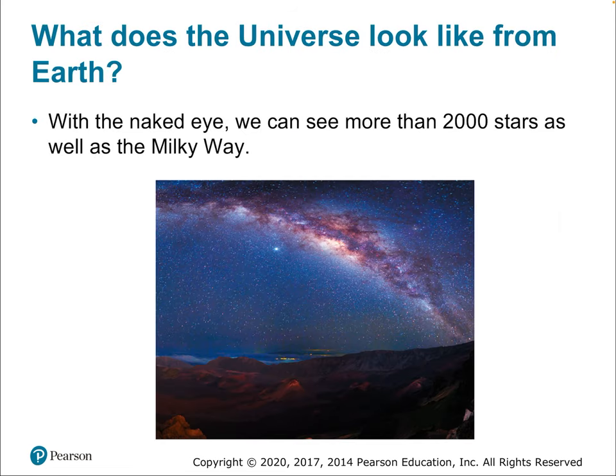With the naked eye, we can see more than 2,000 stars as well as the Milky Way — 2,000 bright stars and the Milky Way composed of many less-bright stars packed so tightly together they appear as a smudge. You can't make out the Milky Way unless the night sky is very dark with very little light pollution, but it might look something like this image.